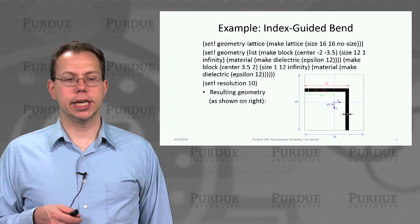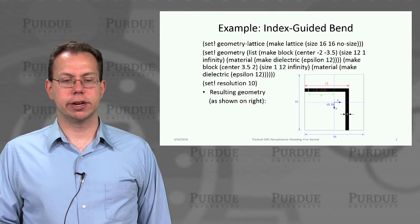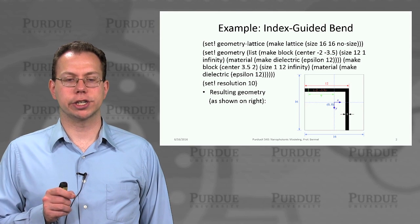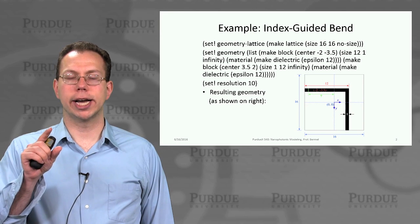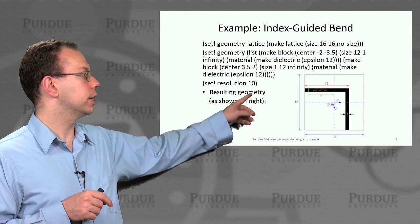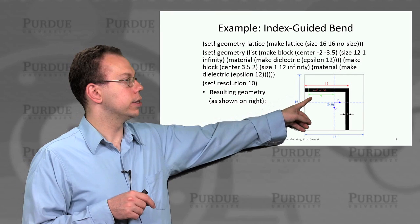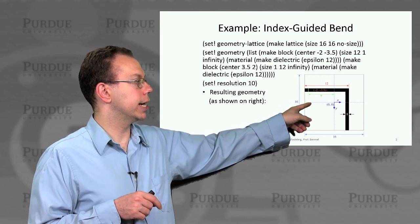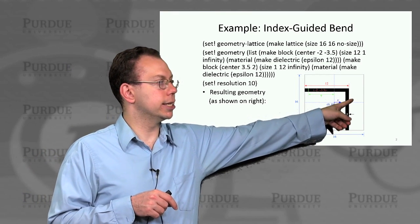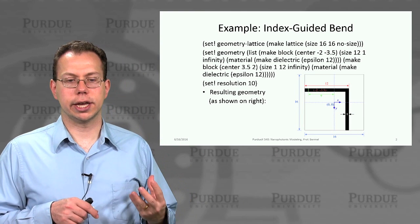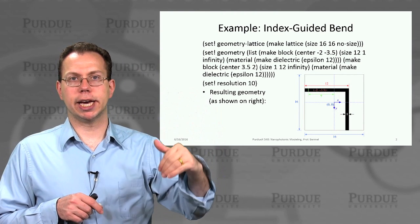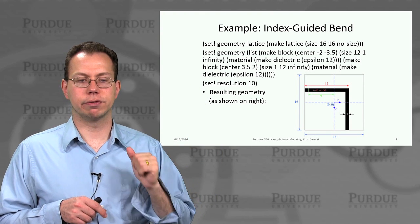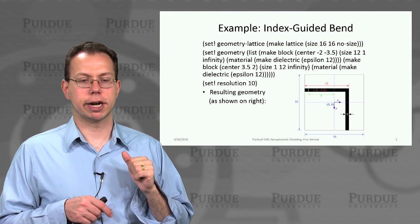So here's basically a modified version of our original waveguide structure. But now we've doubled the size of the lattice in the y direction. And so if you look at this geometry here, you can see before we had a geometry that was like this. So it's essentially like the first half at the top. But then we're adding this bend, and so we have to double the height so we have enough room for it to fully bend around.